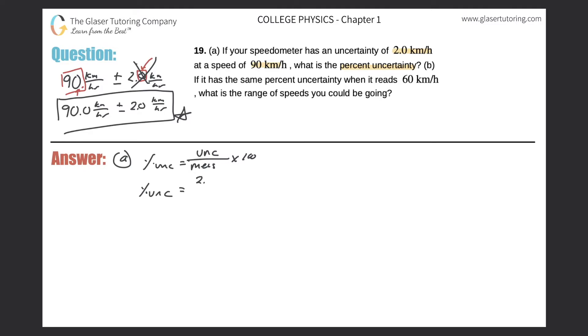Now if I'm trying to find the percent uncertainty, I better know the actual uncertainty value, which we do—it told us it was 2.0 kilometers per hour—and then divide that by 90.0 kilometers per hour and then multiply that by 100. Now notice the units are the same, and that better be the case. If they're not the same you have to convert because percents are unitless and the units will cancel.